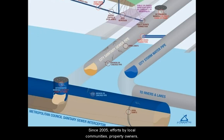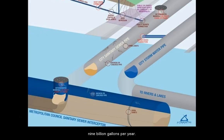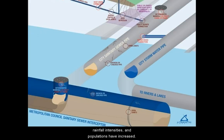Since 2005, efforts by local communities, property owners, and Metropolitan Council Environmental Services have helped to reduce the regional wastewater volume by roughly 9 billion gallons per year. The flow decrease has occurred even as precipitation volumes, rainfall intensities, and populations have increased.